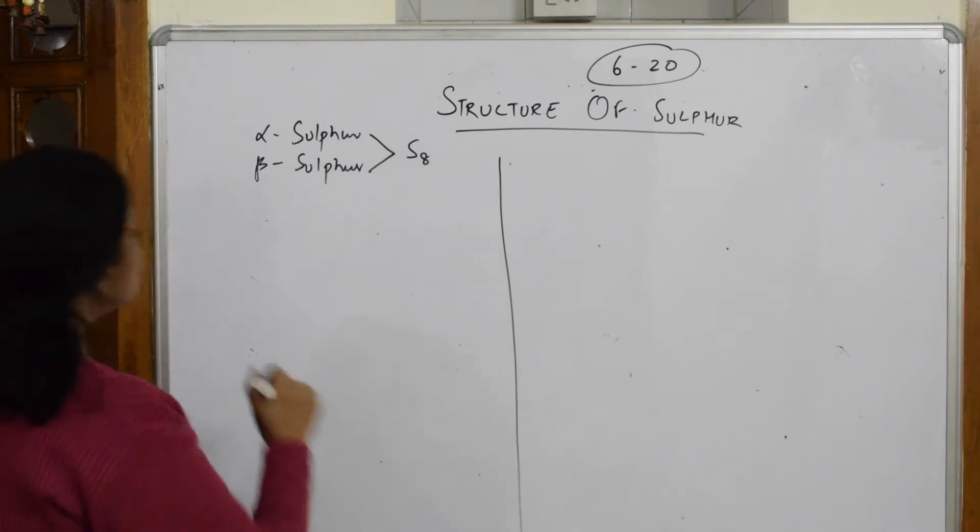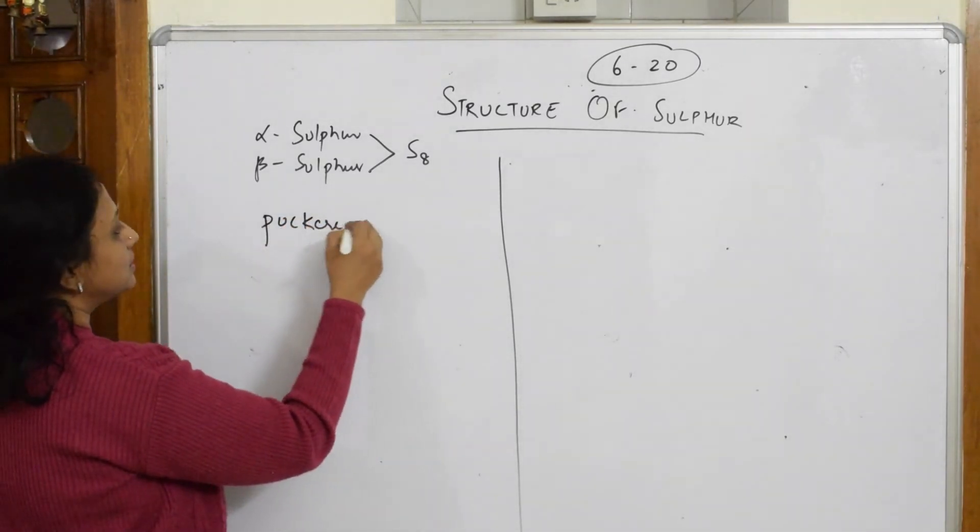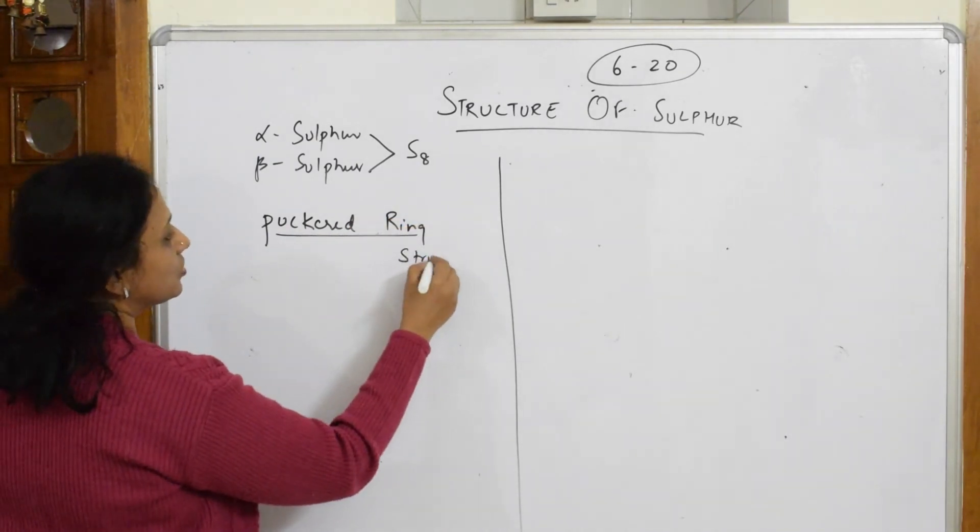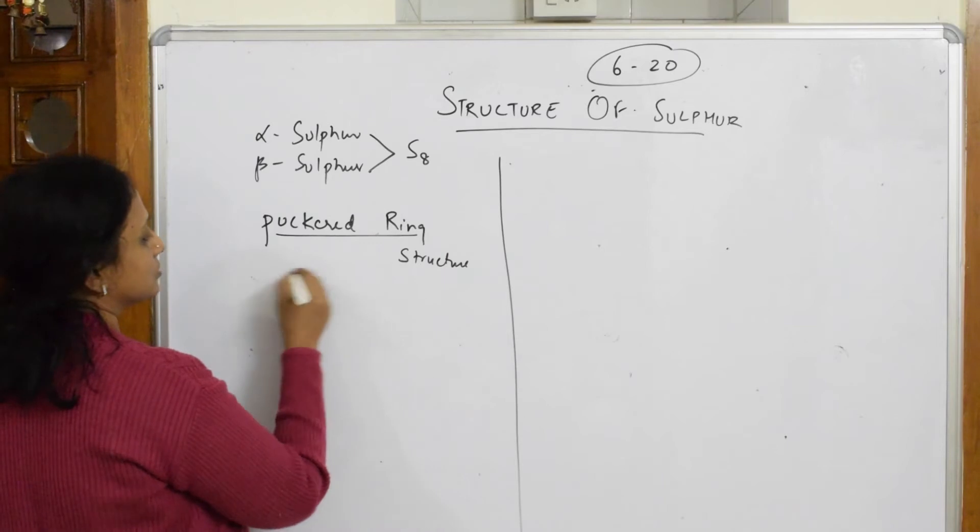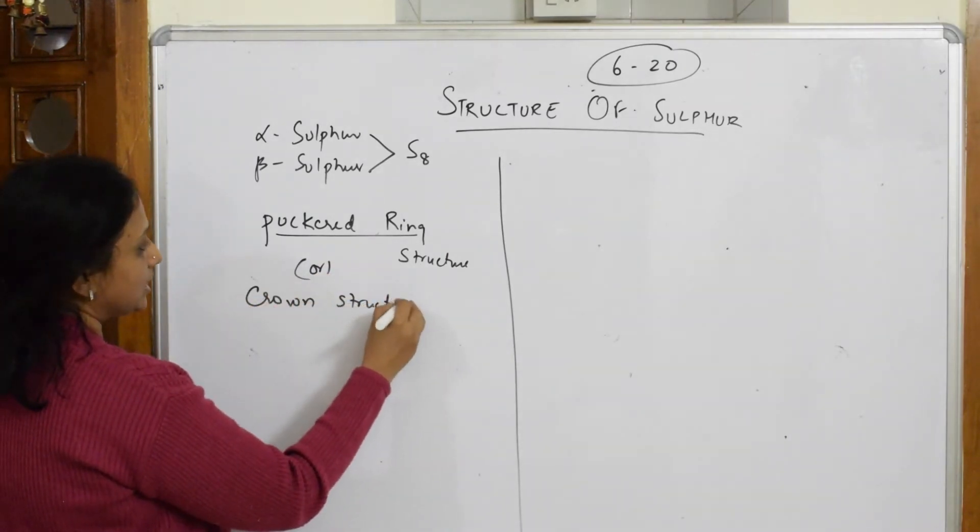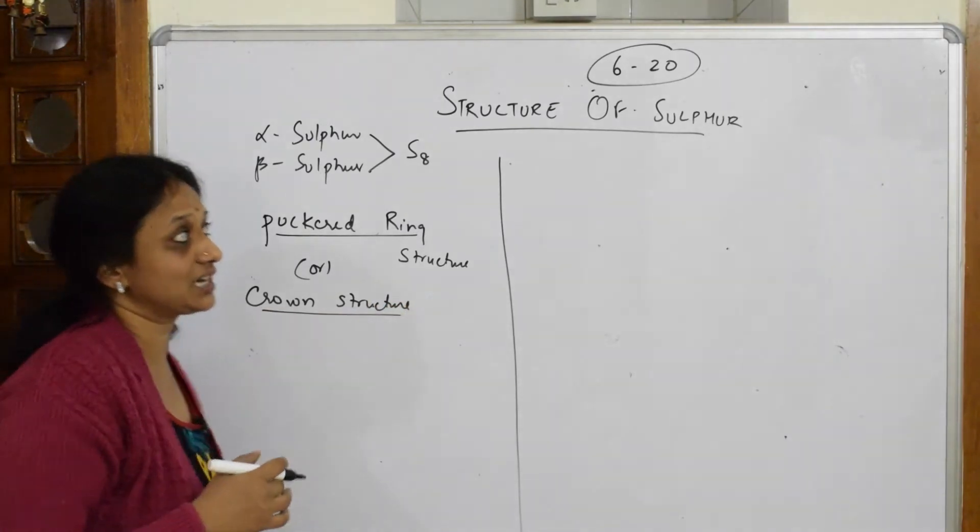The S8 molecule exists in the form of a puckered ring structure, or we call it as crown structure.